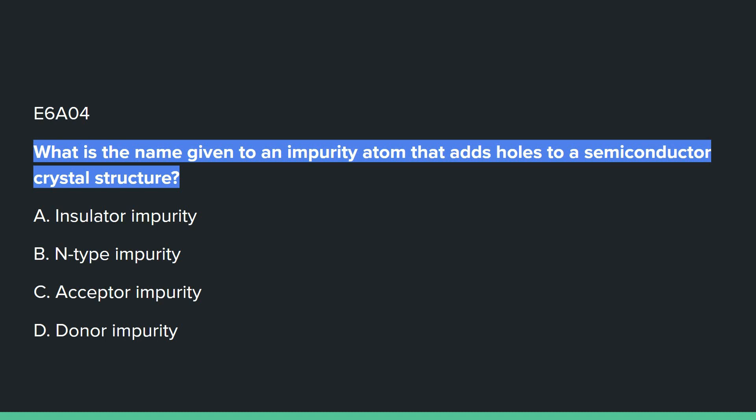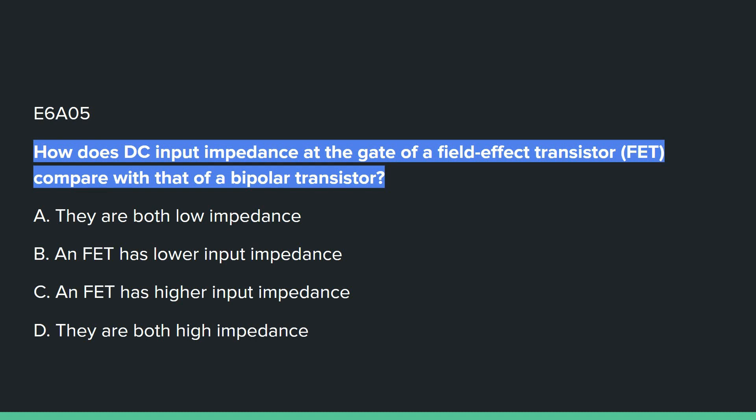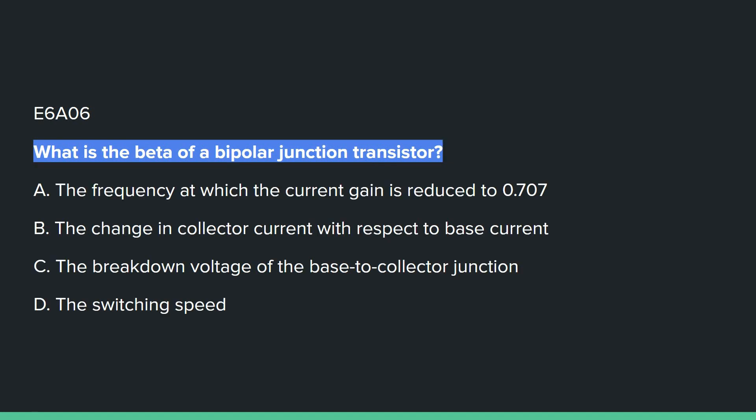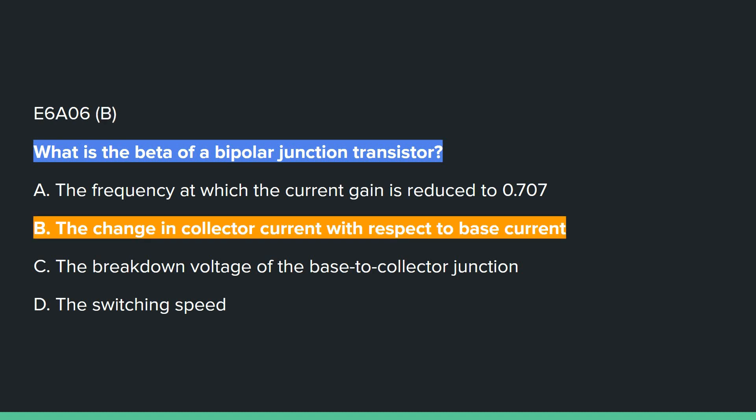E6A04: What is the name given to an impurity atom that adds holes to a semiconductor crystal structure? C, acceptor impurity. E6A05: How does DC input impedance at the gate of a field effect transistor compare with that of a bipolar transistor? C, an FET has higher input impedance. E6A06: What is the beta of a bipolar junction transistor? B, the change in collector current with respect to base current.